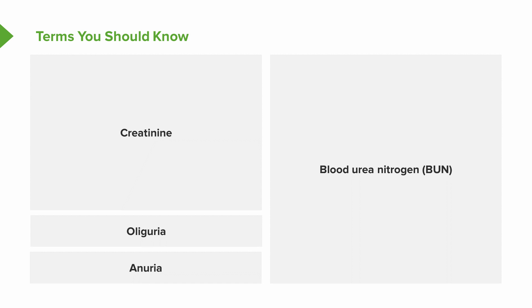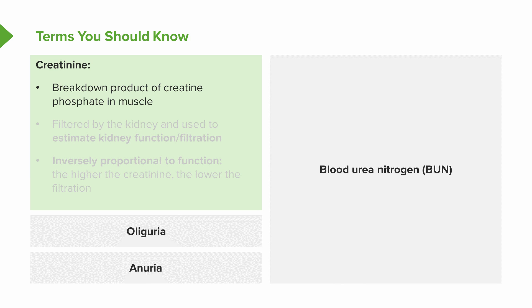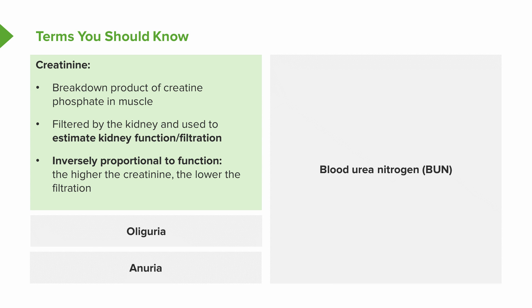There are some important terms that I really want you to understand so you can better understand the cases we're going to be talking about. The first is creatinine. Creatinine is a breakdown product of creatine phosphate in muscle. It's filtered completely by the kidney, not metabolized, and therefore is used to estimate kidney function and filtration. It has an inverse relationship to function, meaning that the higher the creatinine, the lower the GFR or filtration rate.